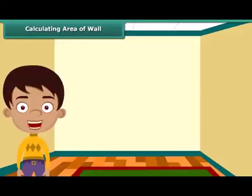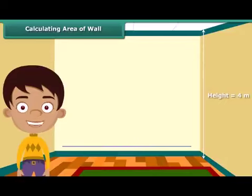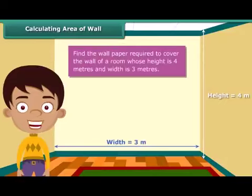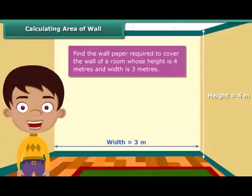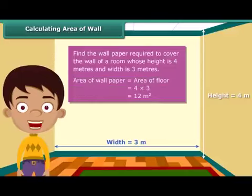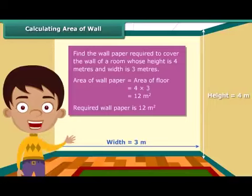Now let us solve a question based on the concept. Each wall of Nidhi's room is 4 meters high and 3 meters wide. She wants to cover one of the walls with wallpaper. The area of the wallpaper required will be the same as the area of the wall that needs to be covered. The area of the wall is 4 meters multiplied by 3 meters, which is 12 square meters. So 12 square meters of wallpaper will be required to cover the wall of Nidhi's room.